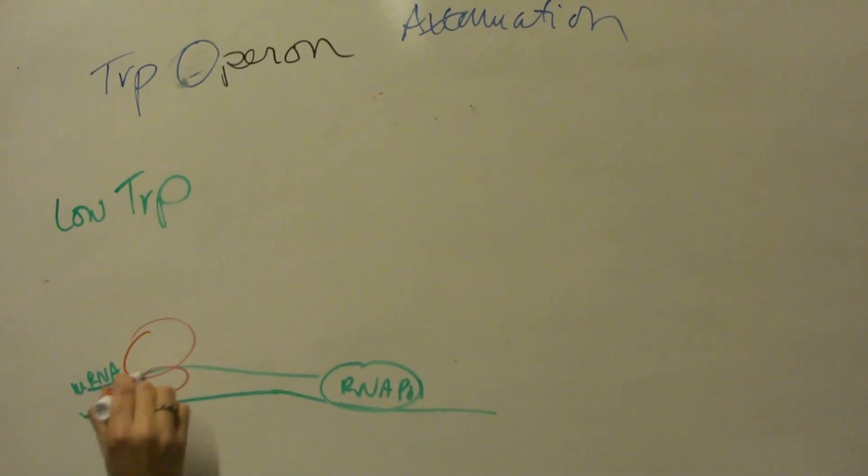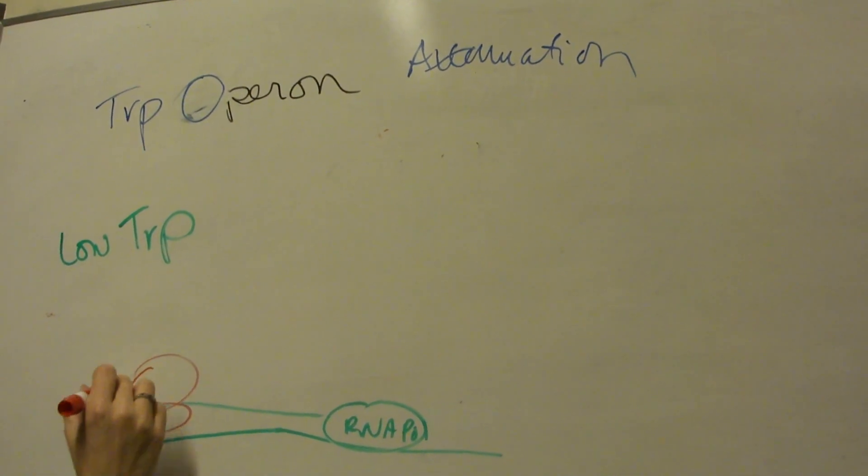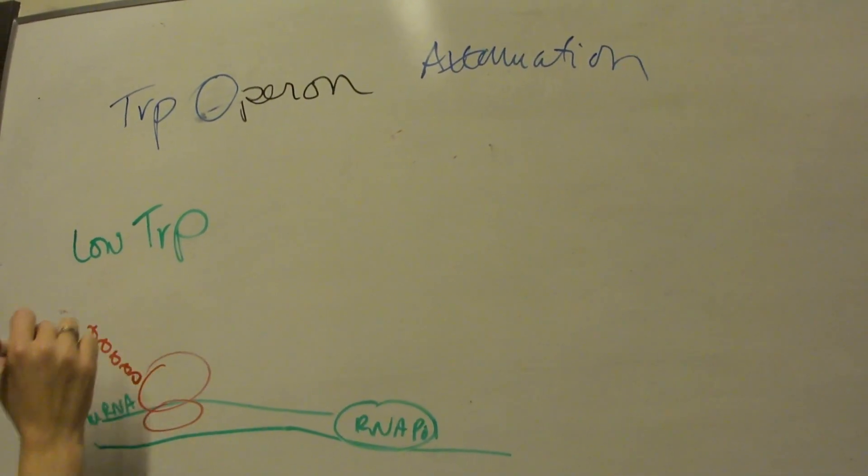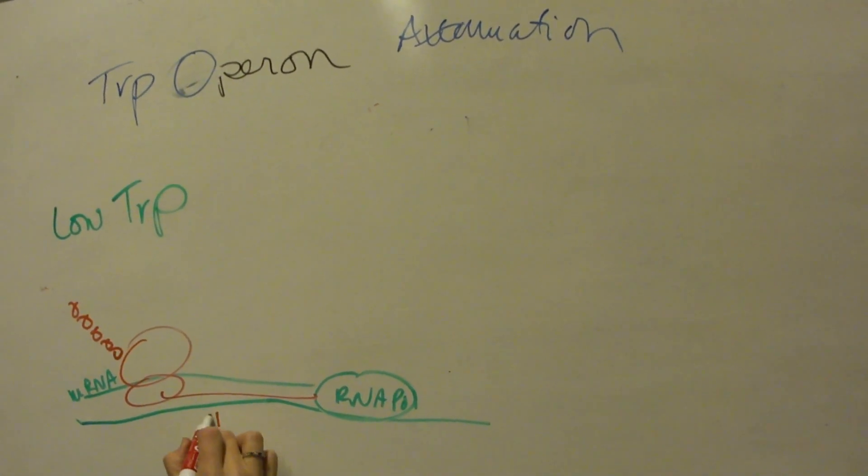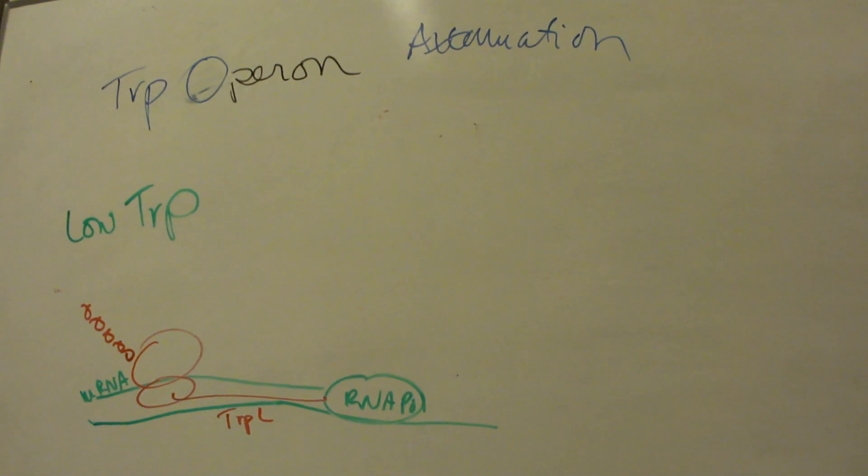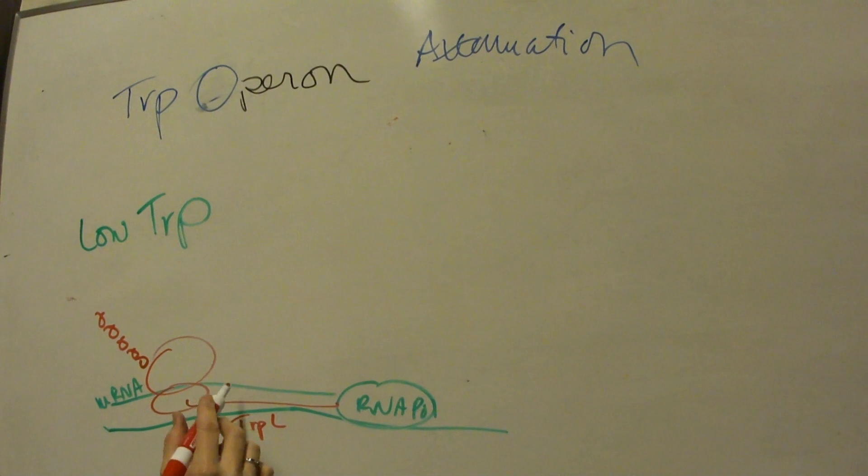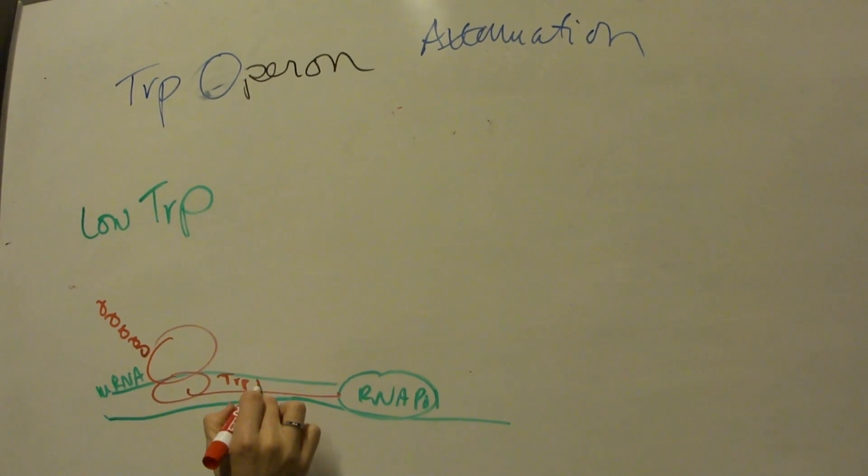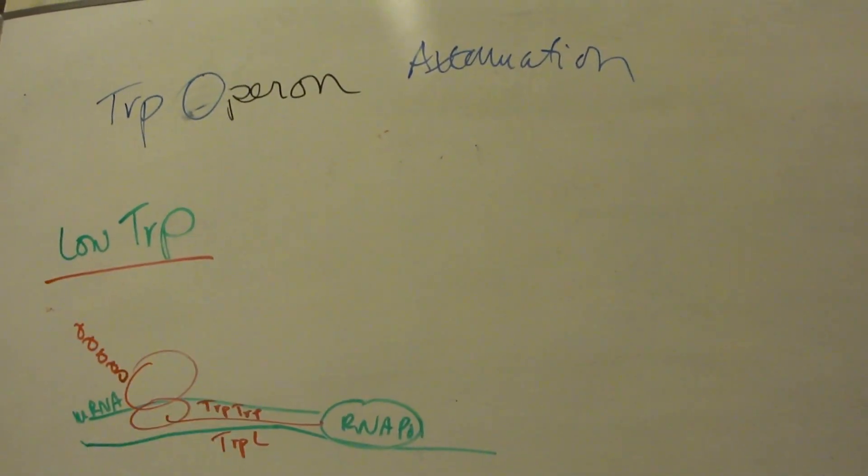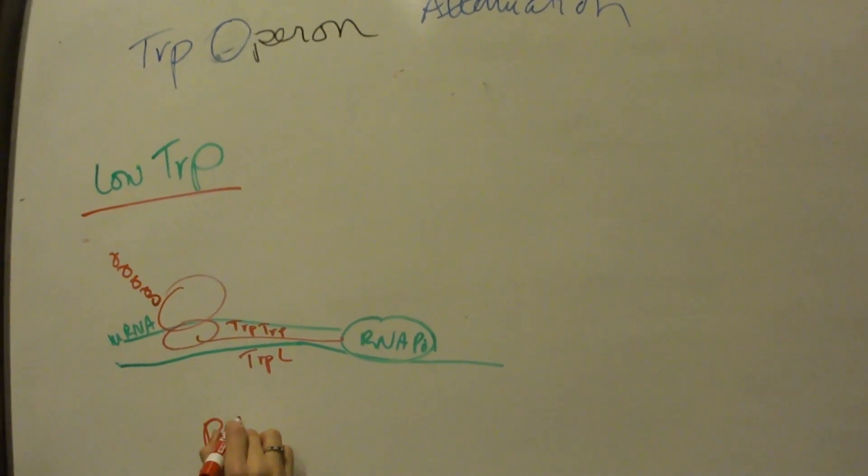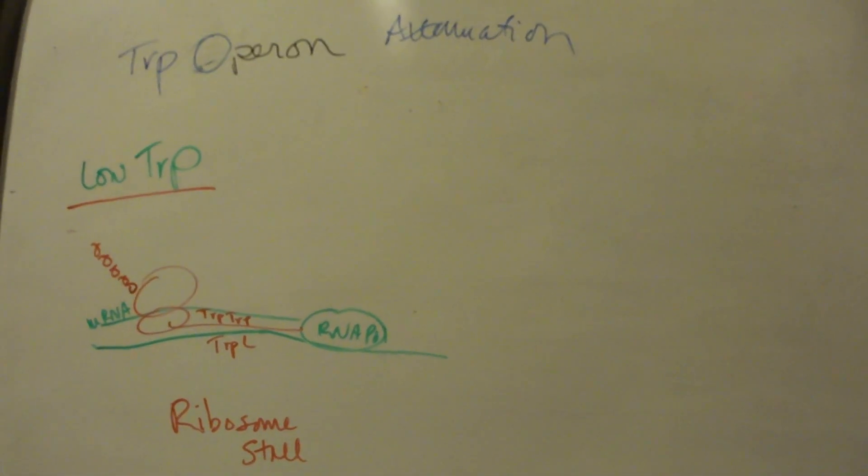RNA pol is making your mRNA, and at the same time ribosome is jumping on here and doing translation, because in bacteria they're a coupled process. So it's tracking along and making its polypeptide. Now as it approaches that region 1 where we have our two trp codons, if it reaches that region and we're low on trp, it's going to stall.